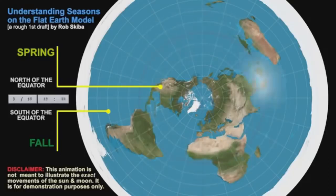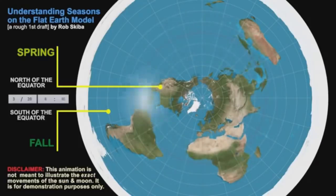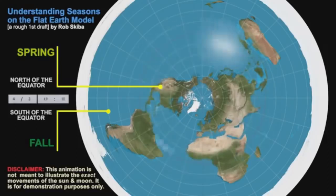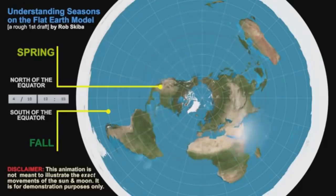In north latitudes, when the Sun is going north, it rises earlier each day, is higher at noon, and sets later. While in southern latitudes, at the same time, the Sun, as a matter of course, rises later, reaches a lesser altitude at noon, and sets earlier.